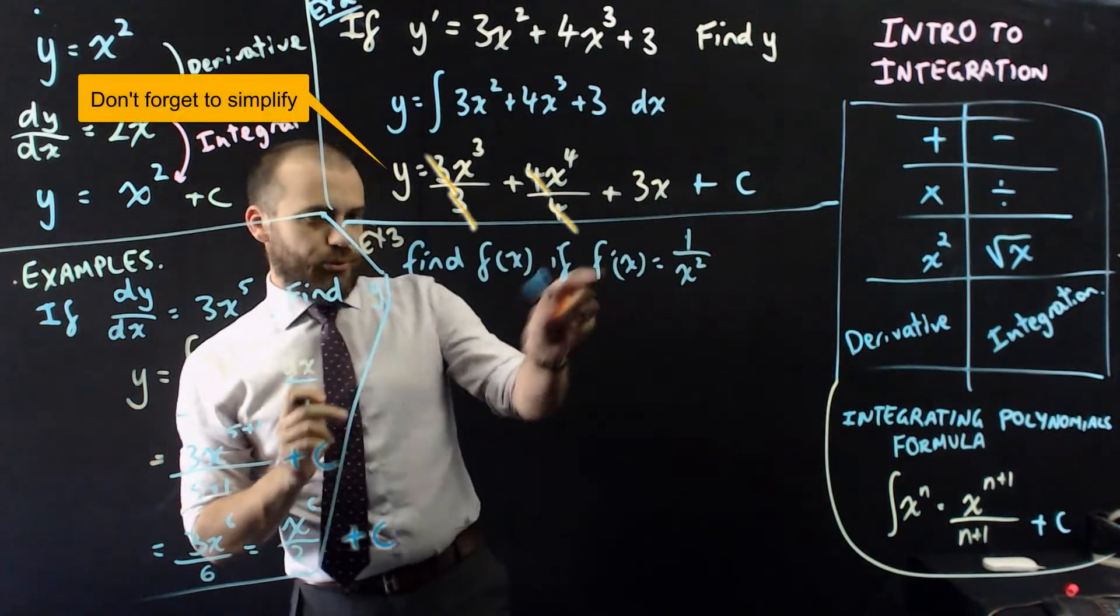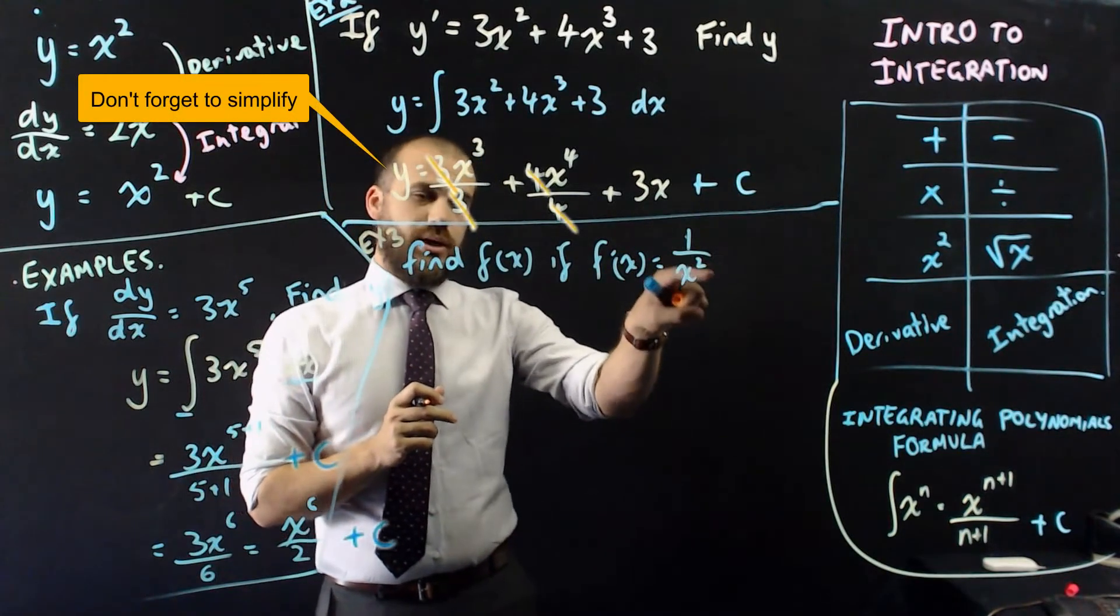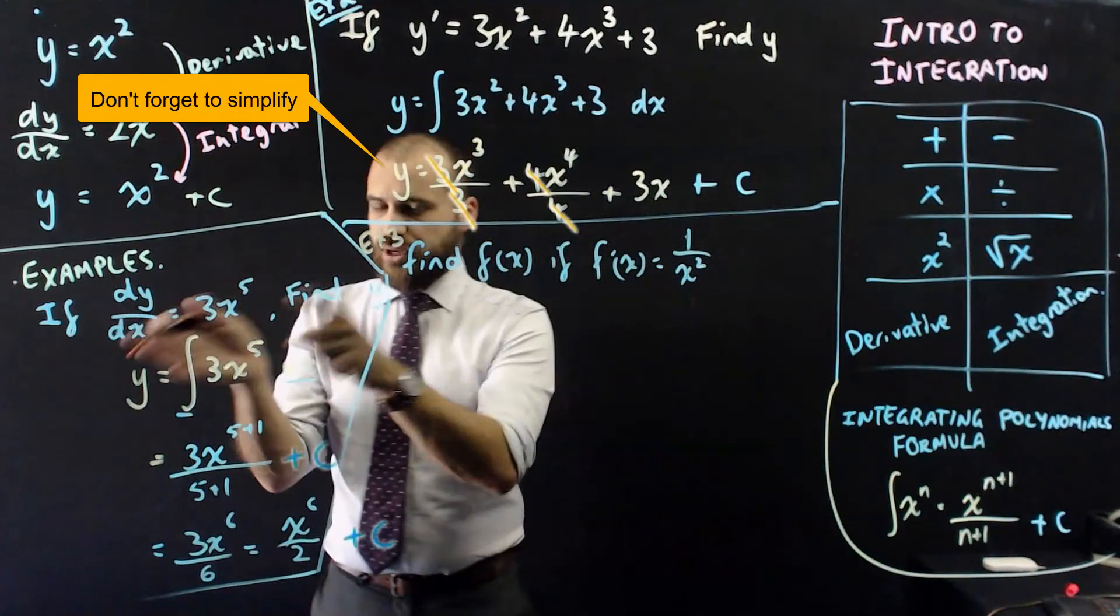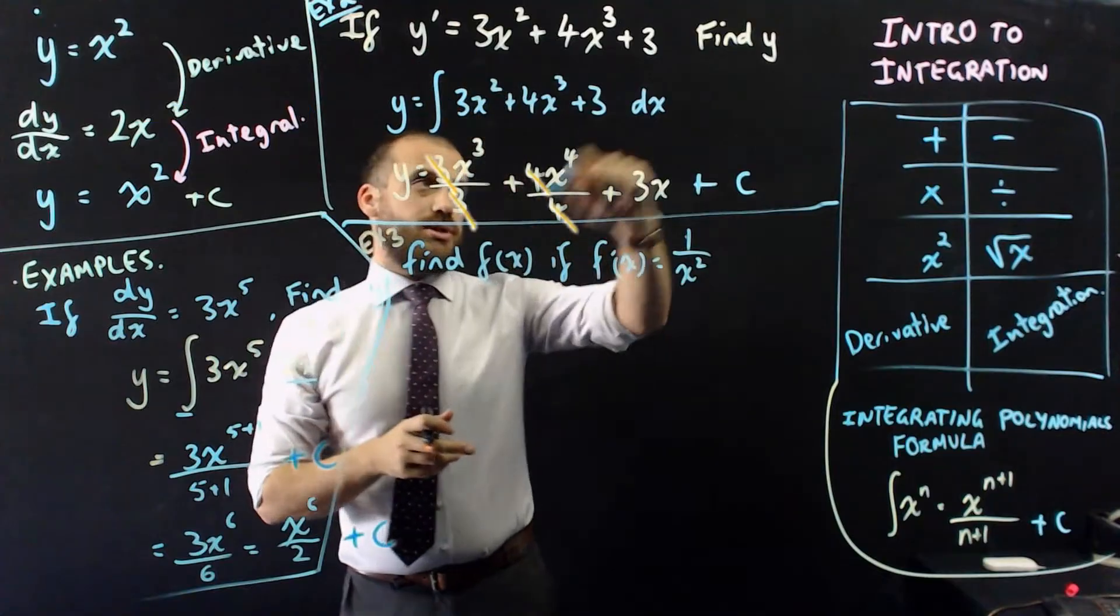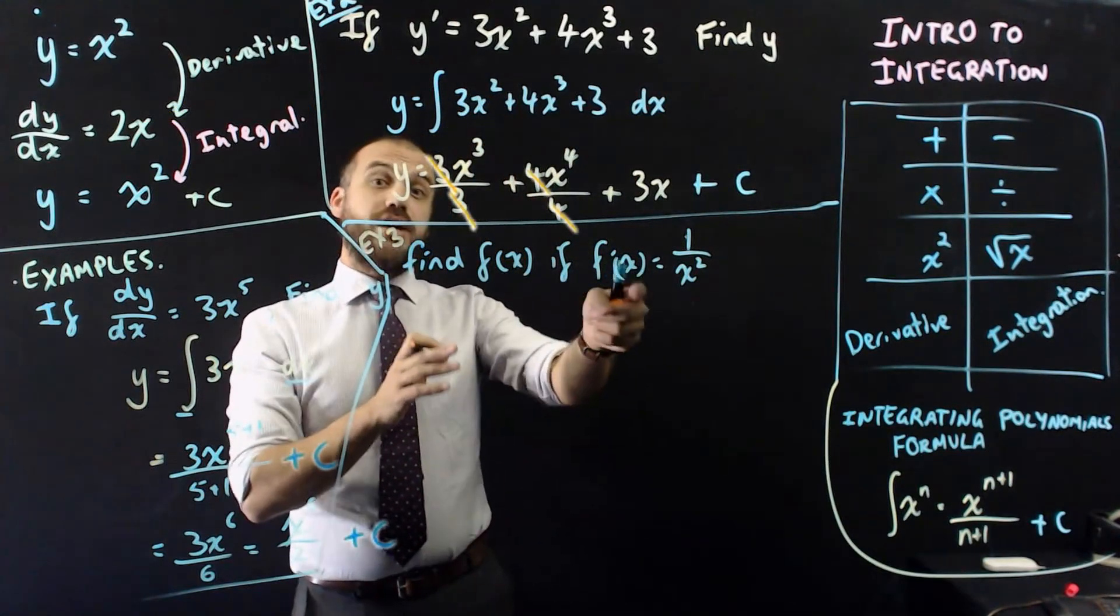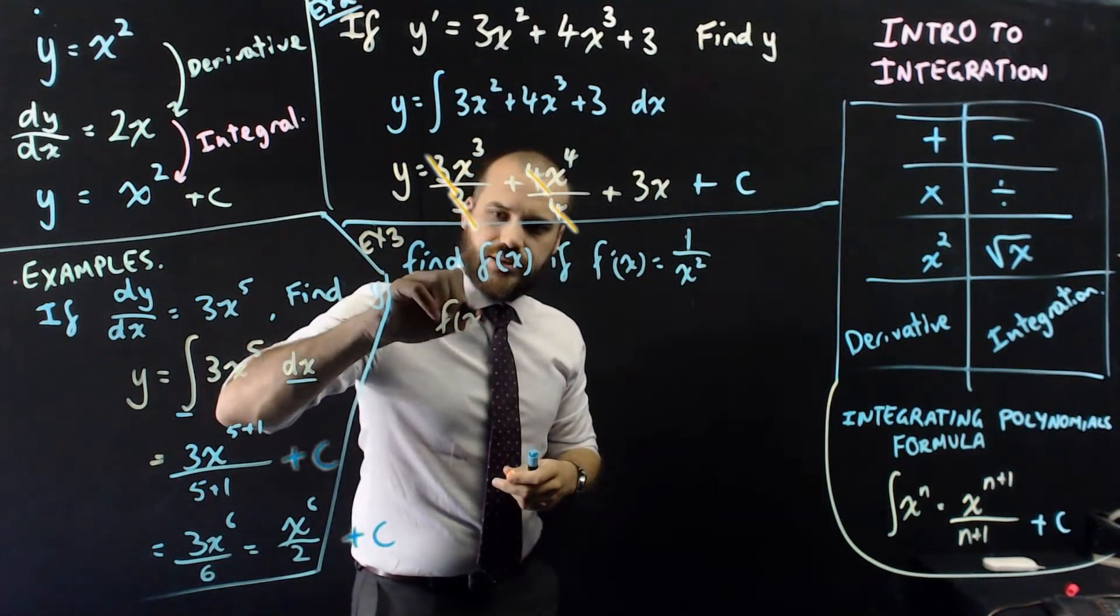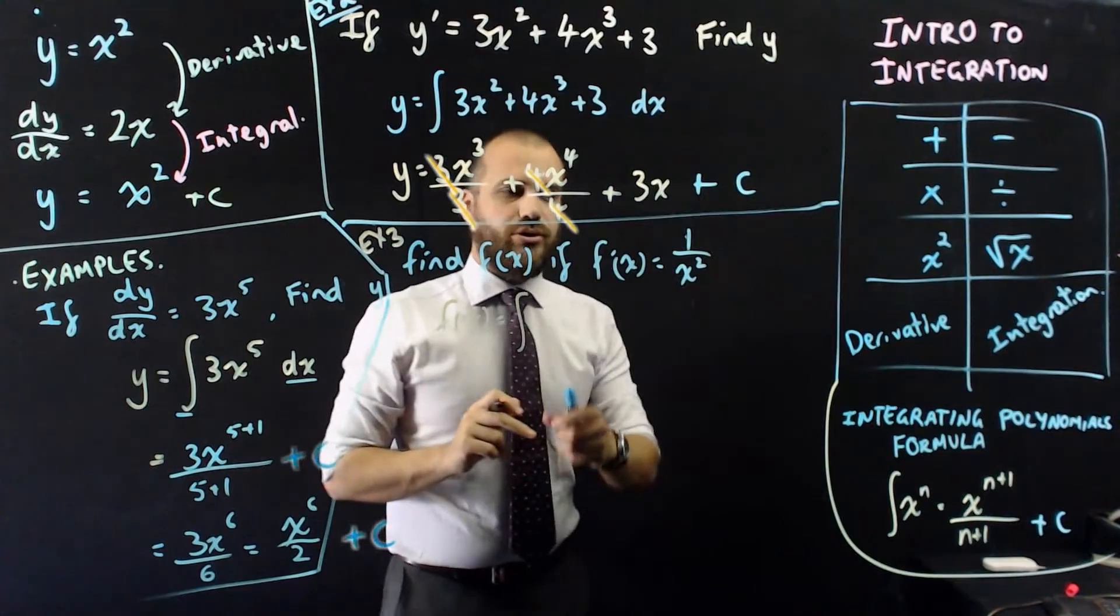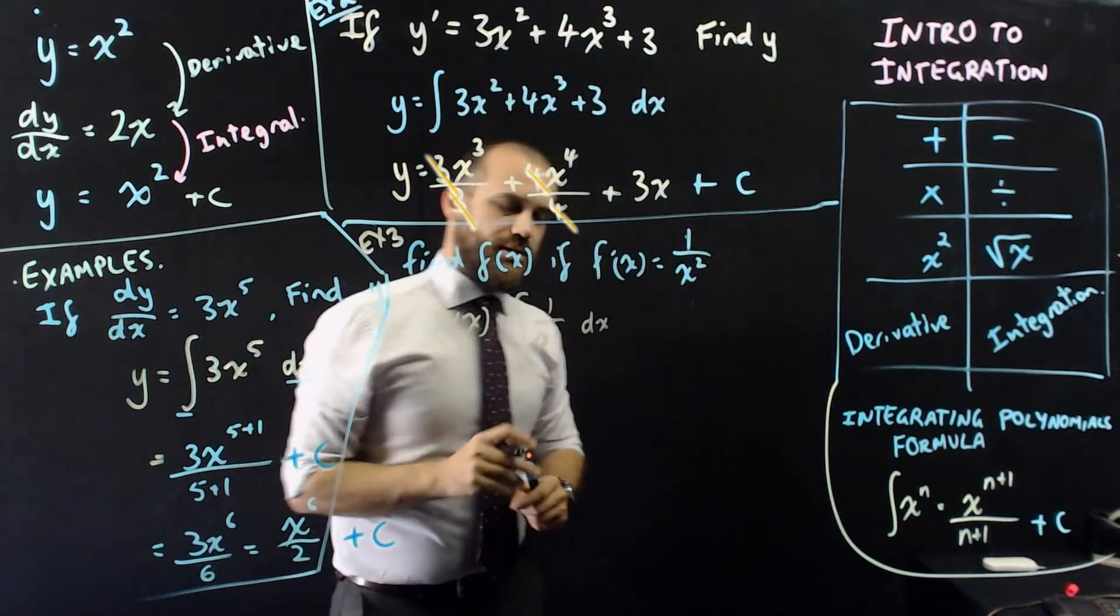Example 3. Alright, so example 3 here, find f of x, if f dash of x equals 1 on x squared. I'm asking the same question three different ways here, if dy dx equals that, find y, if y dash equals that, find y, find f of x, if f dash of x equals that. So, f of x equals the integral of the thing we were just told about, 1 on x squared, with respect to x.